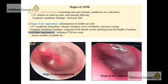As you can see here, there are two pictures showing the stage of pre-suppuration. This is the initial stage of pre-suppuration where we can see few congested vessels running along the handle of the malleus with slight erythematous change of the tympanic membrane. This second picture of the pre-suppuration stage shows a collection in the middle ear which looks like a serous exudate.